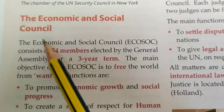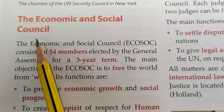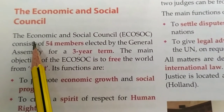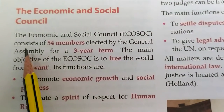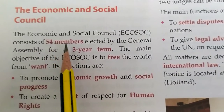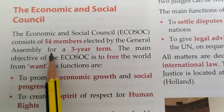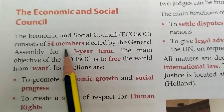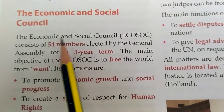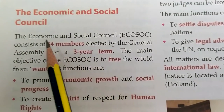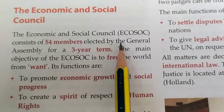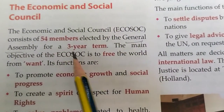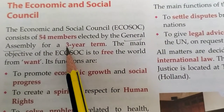We will study about the Economic and Social Council, the third council. The Economic and Social Council consists of 54 members elected by the General Assembly for a three-year term.